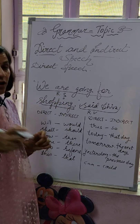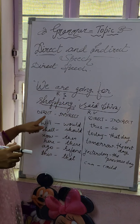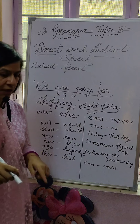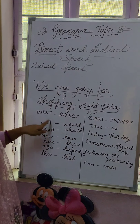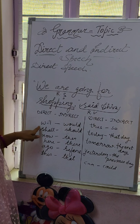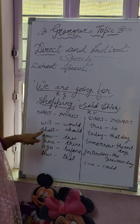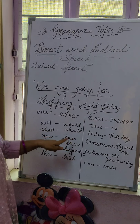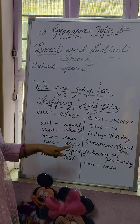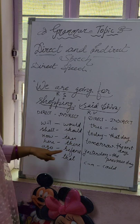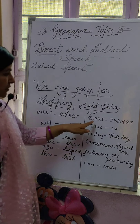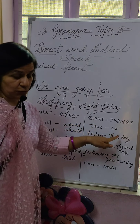A few changes take place when we change from direct to indirect speech. In direct speech, 'will' changes into 'would.' 'Shall' will change into 'should.' 'Now' will change into 'then.' 'Here' will change into 'there.' 'Ago' will change into 'before.' 'This' will change into 'that.'